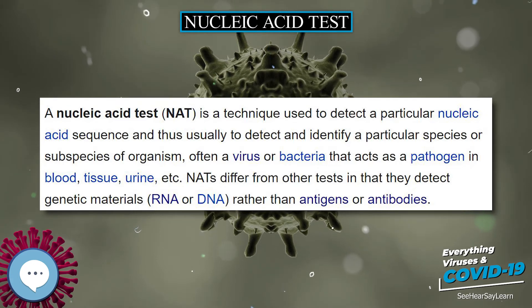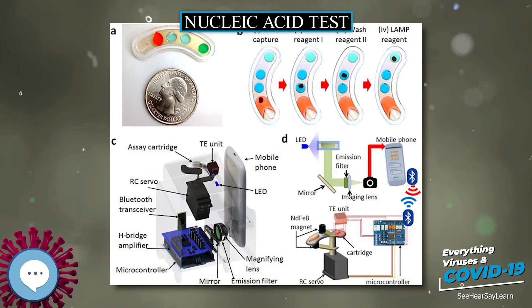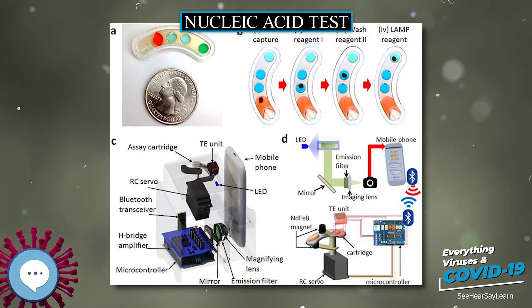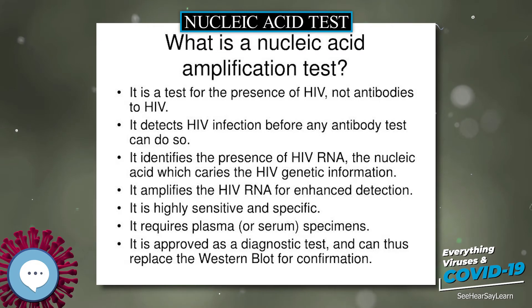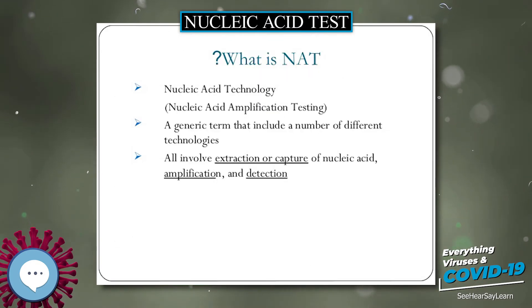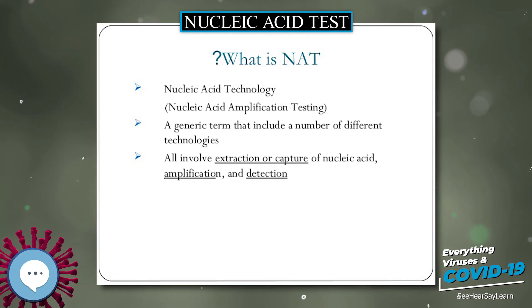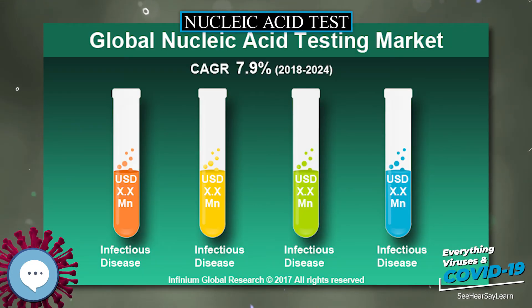The standard free energy of the reaction is close to zero. On the other hand, if a spurious target reacts with the toehold exchange probe, the reaction still proceeds forward, but the standard free energy increases, making it less thermodynamically favorable. The standard free energy difference is significant enough to give obvious discrimination in yield.